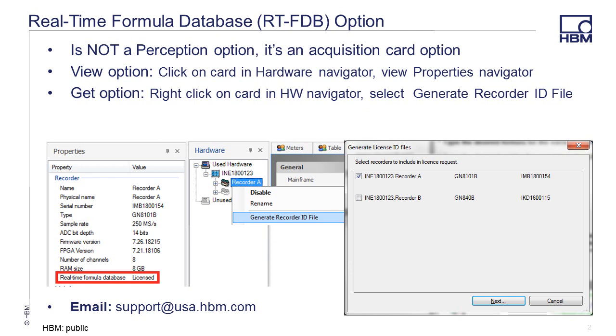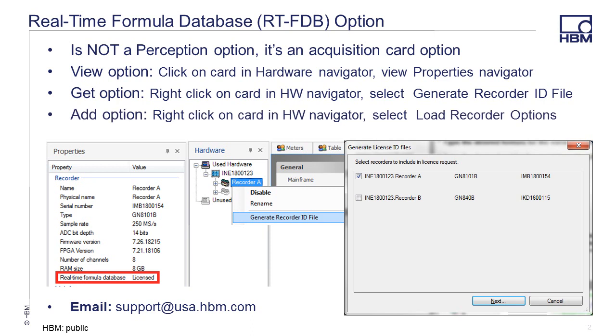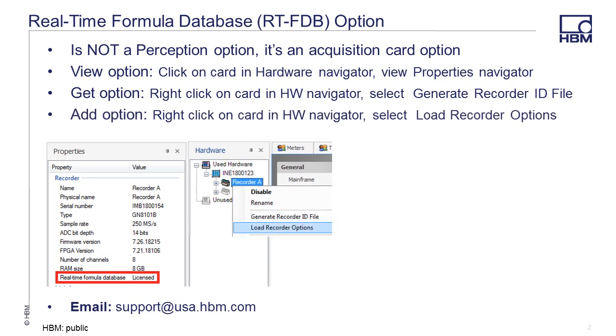Once you receive the license file, you can add the option by right-clicking on the card in the Hardware Navigator and this time selecting Load Recorder Options to load the license file.